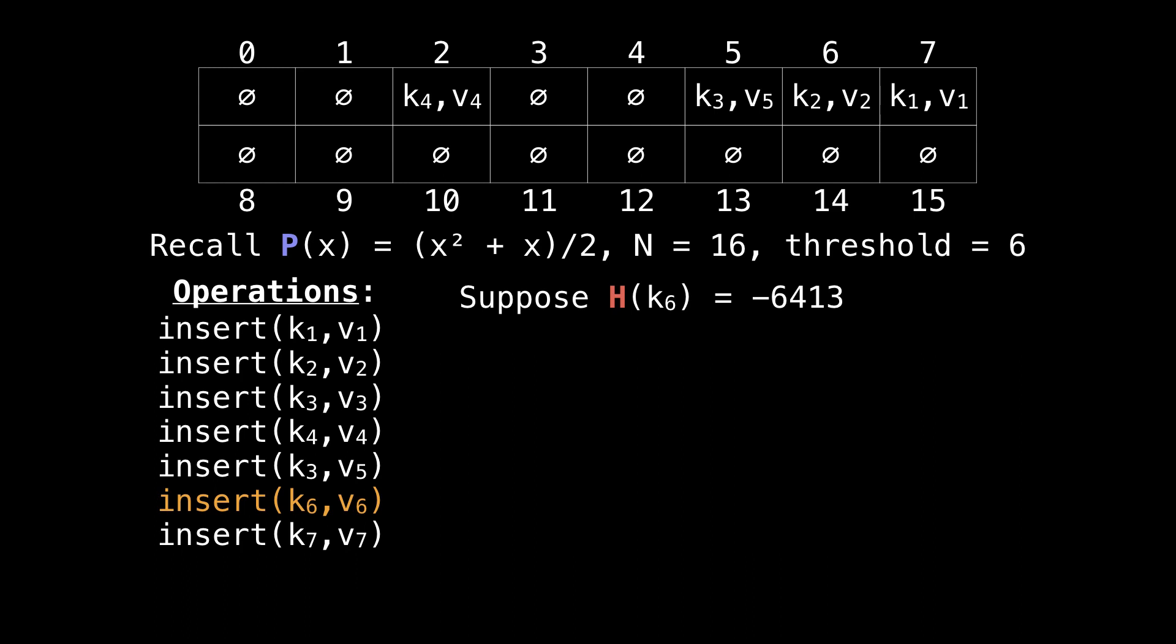Suppose that the key k6 hashed to -6413. That hashes to 3 mod 16. That slot is free, so we're just going to insert it.